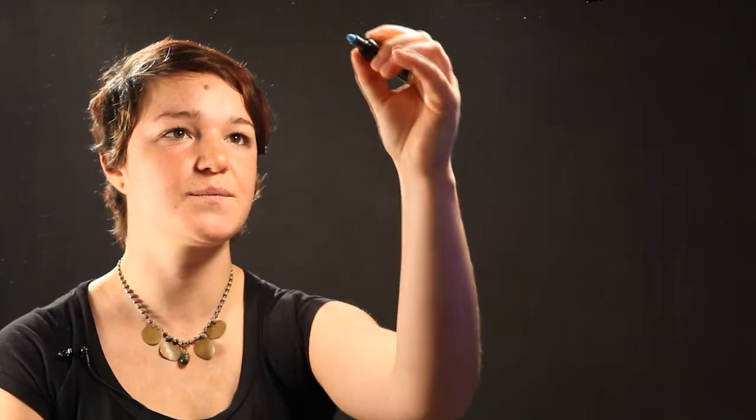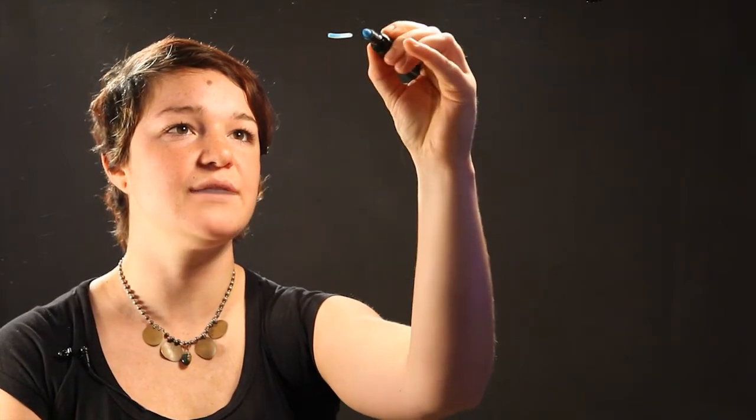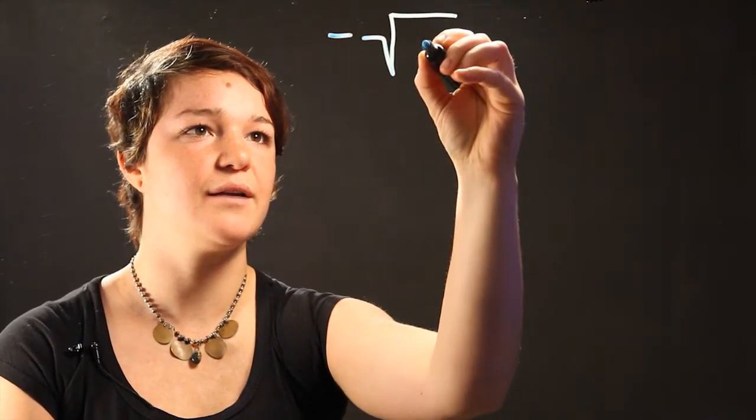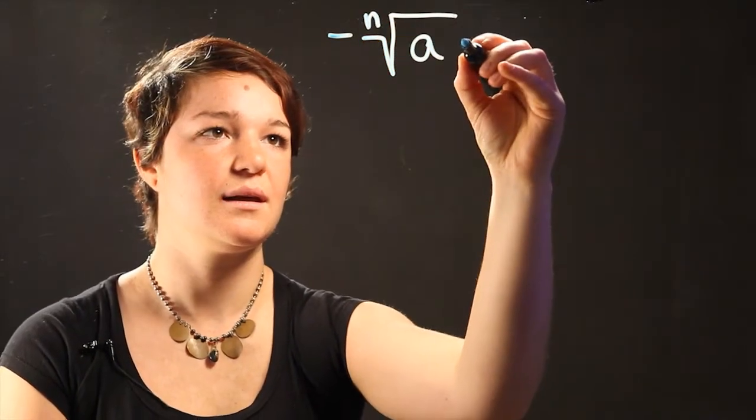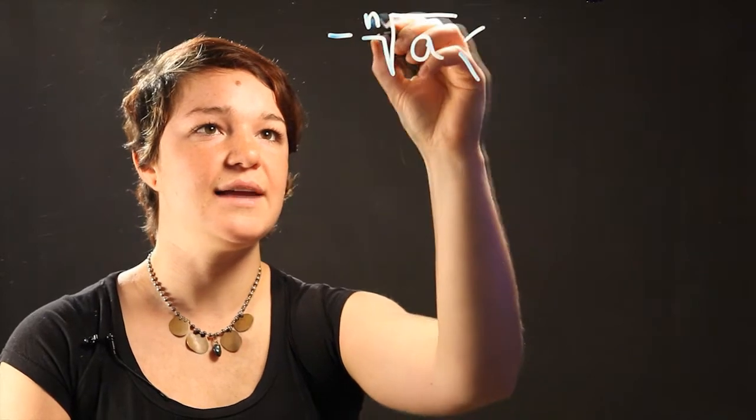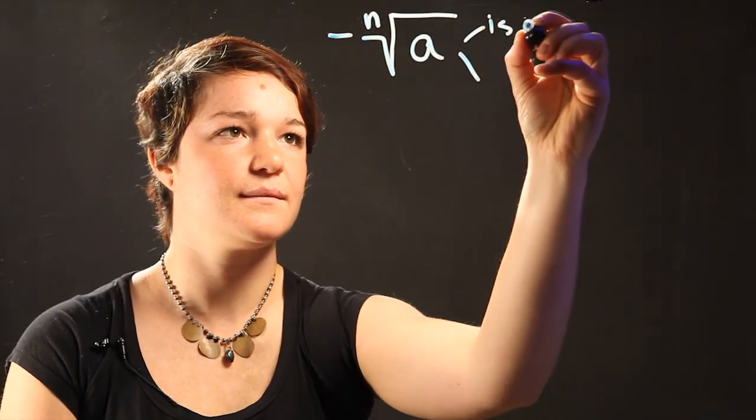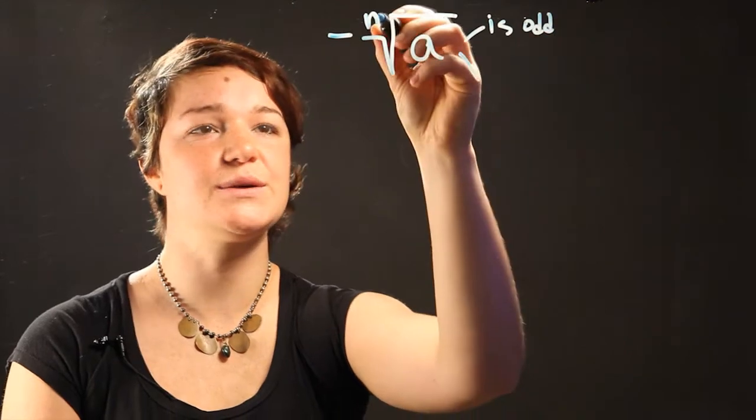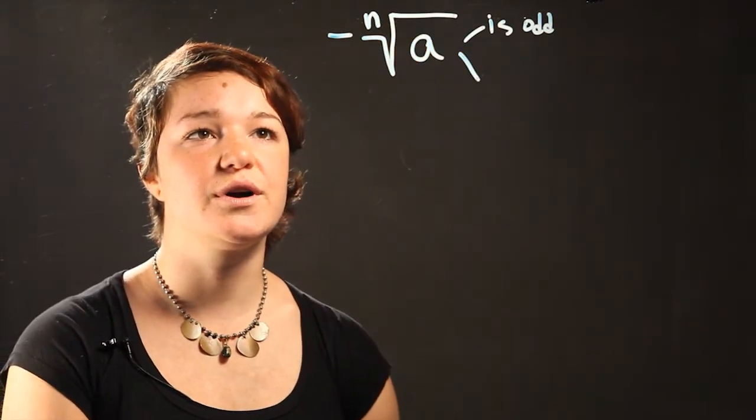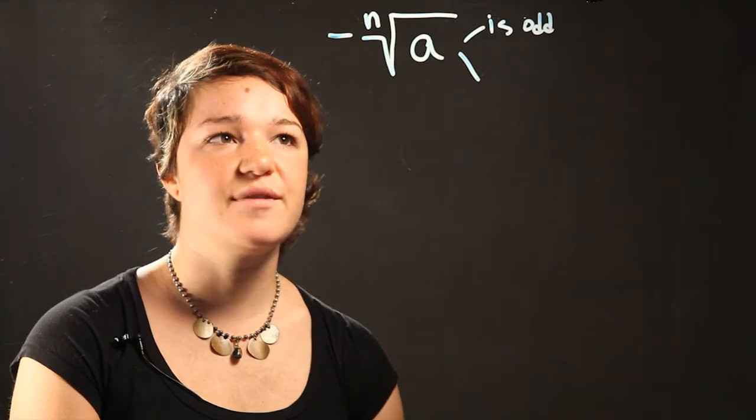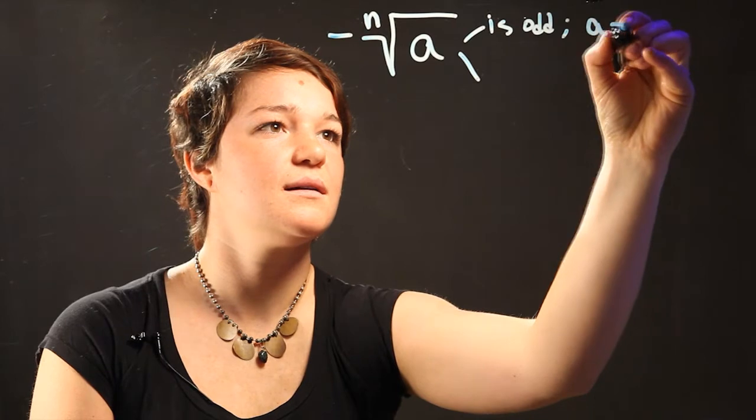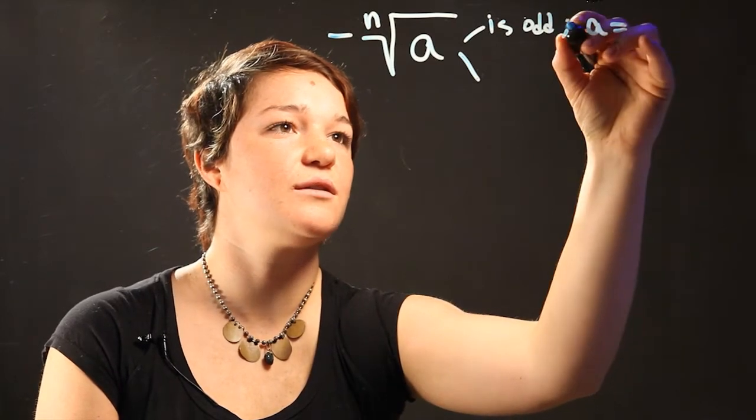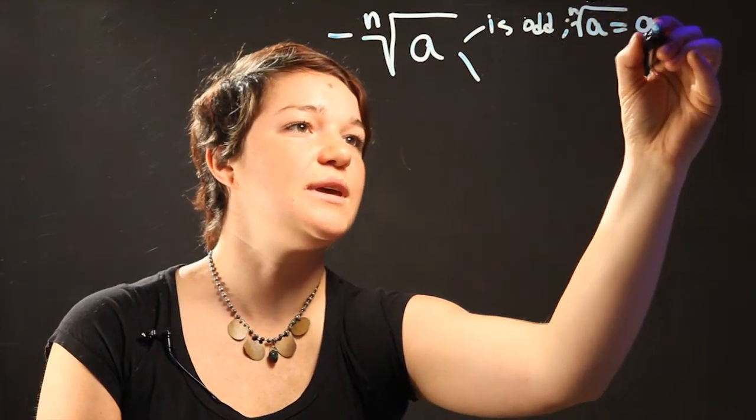So the basic rules for radicals are: if you have a radical of a with an index of n, and if the index n is odd—it's an odd number so you have the cubic root or the root to the fifth power—then the radical of a is going to be equal to a.